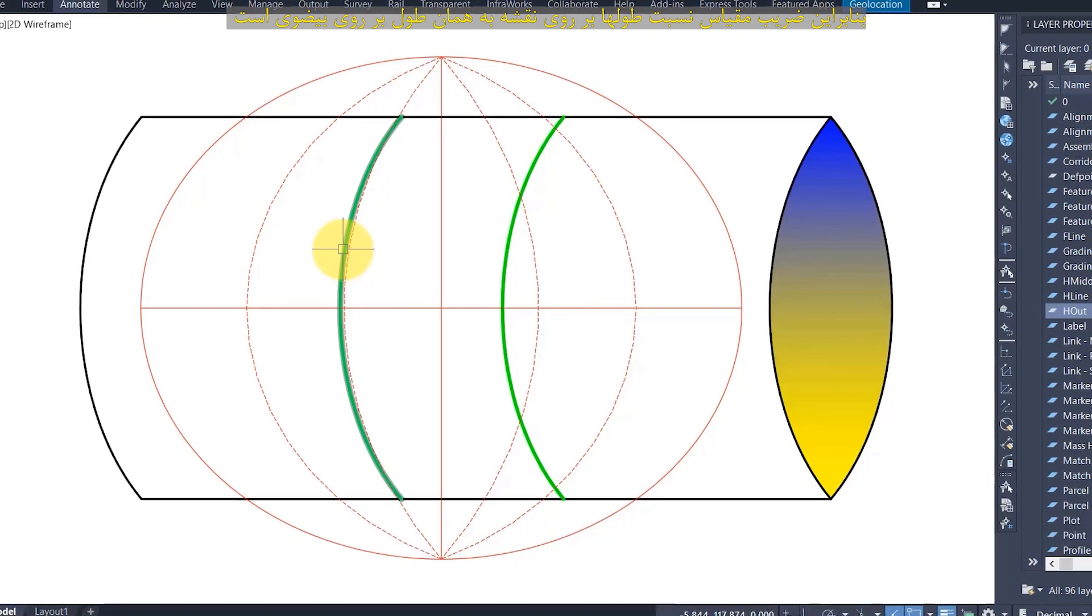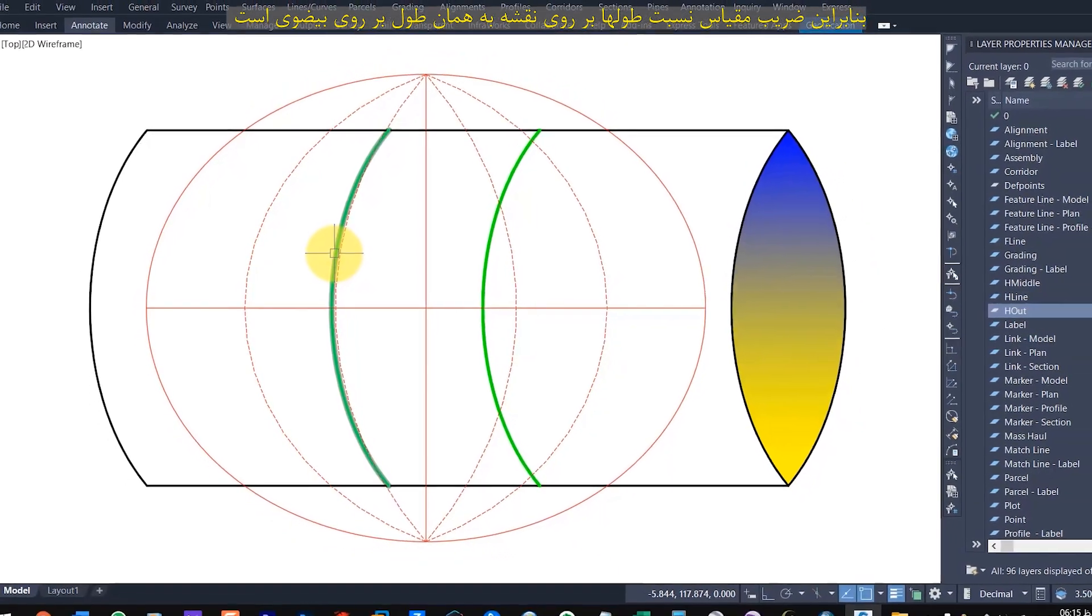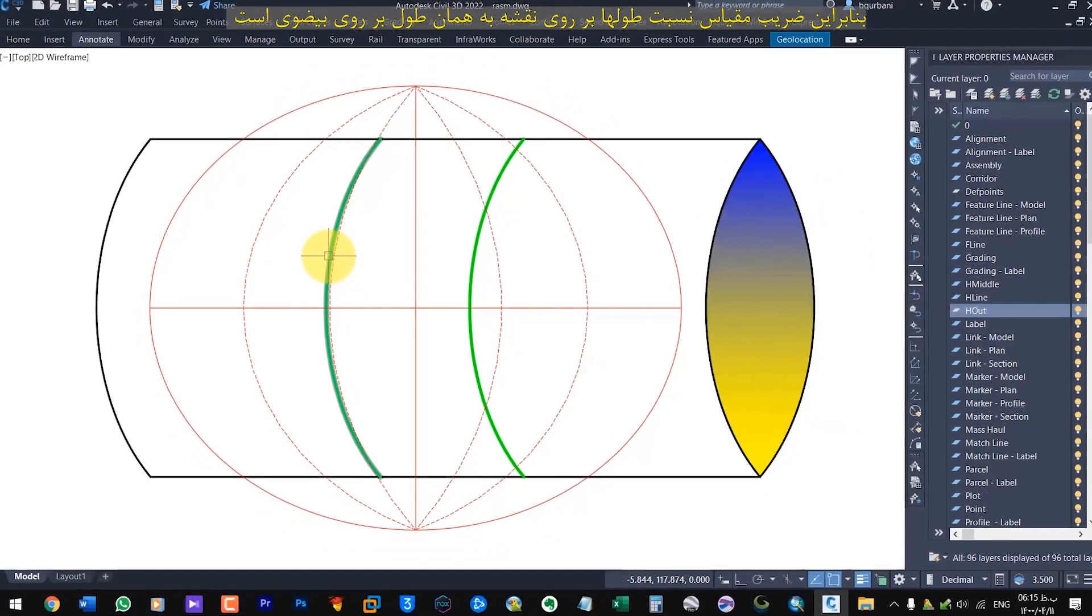Therefore, the scale factor is the ratio of the length on the map to the same length on the ellipse.